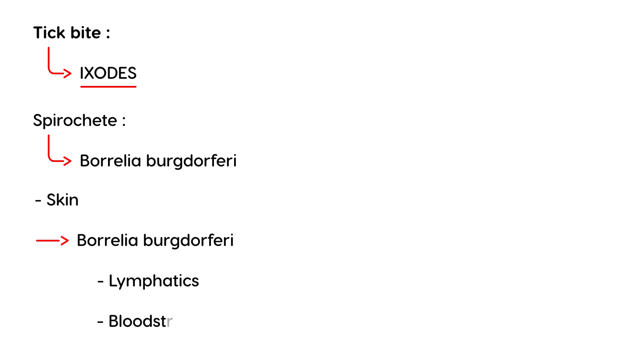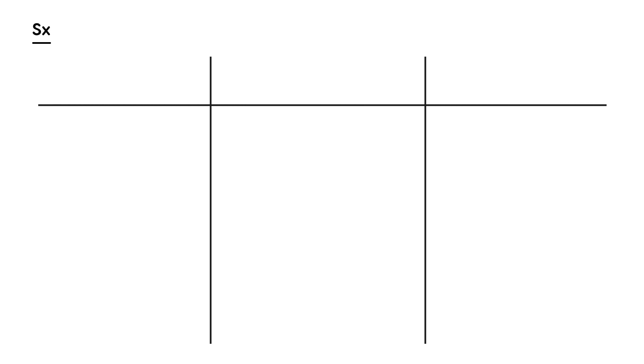When that happens, it can cause systemic symptoms. Lyme disease symptoms, if present, are characterized by stage. You have early localized, you have early disseminated, and then you have late.